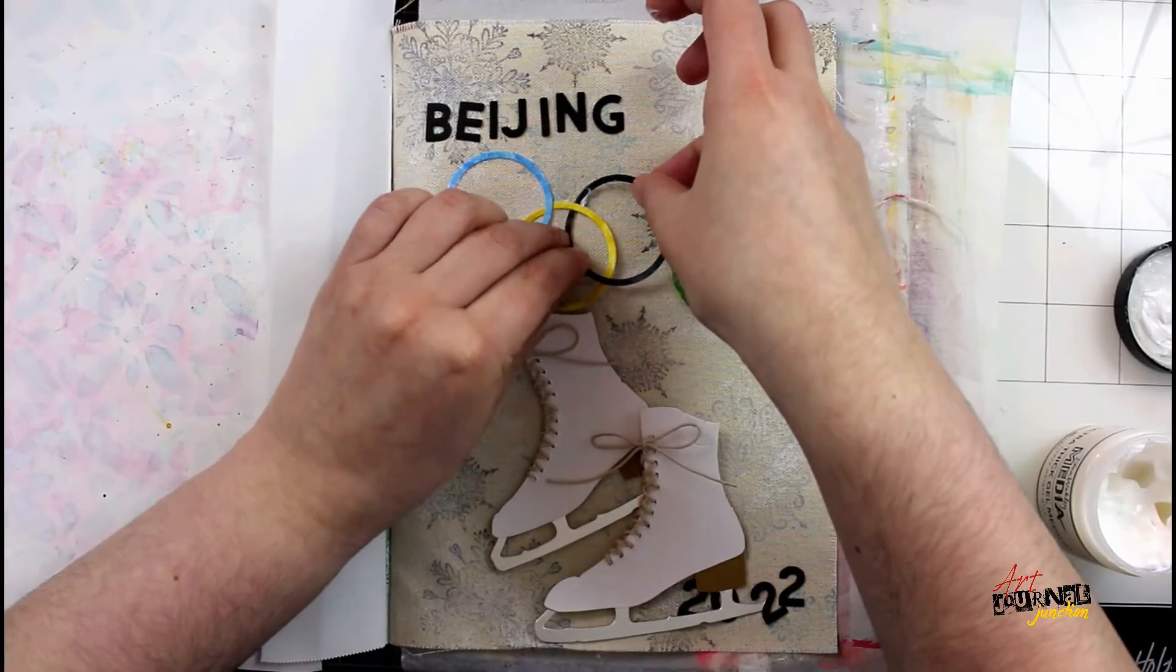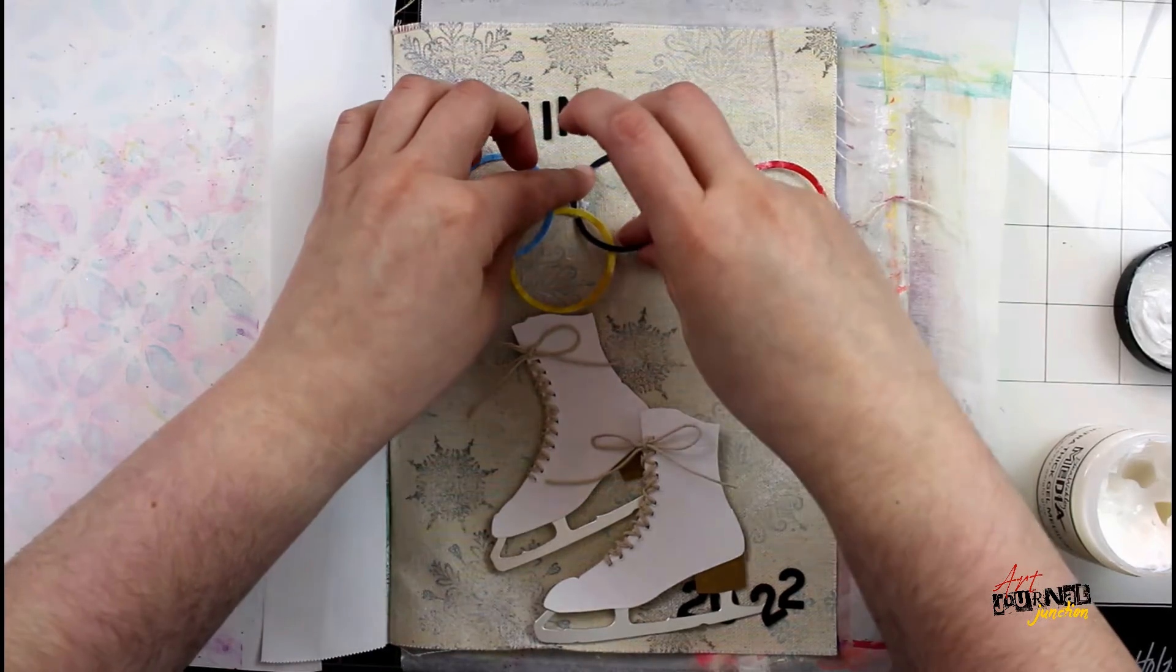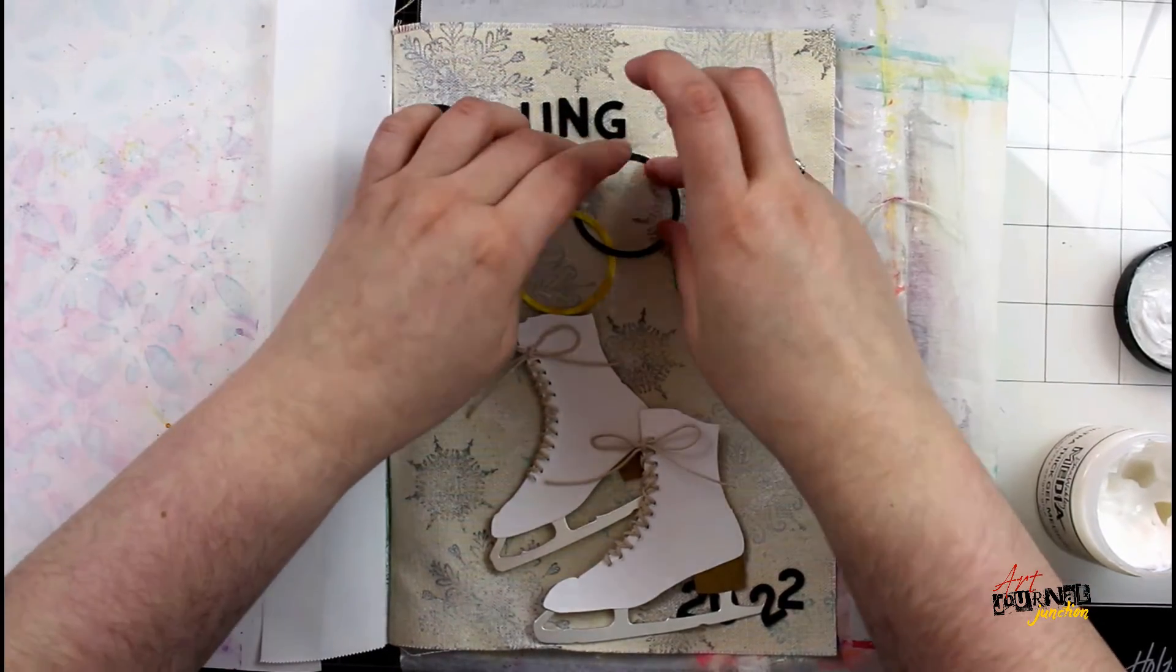Now I'm ready to begin assembling my page. So I am cutting these rings so that I can weave them together just like the Olympic rings look.